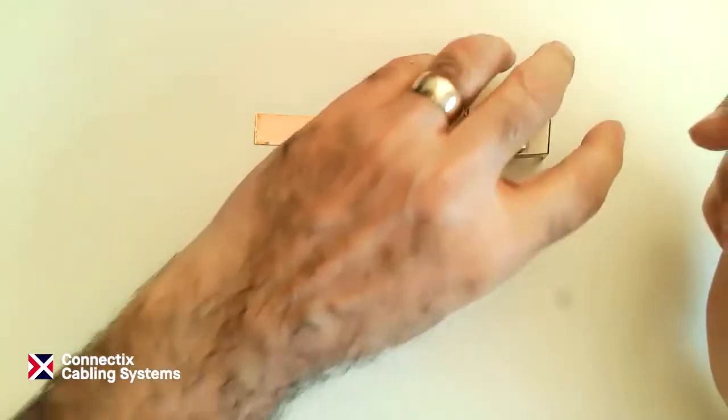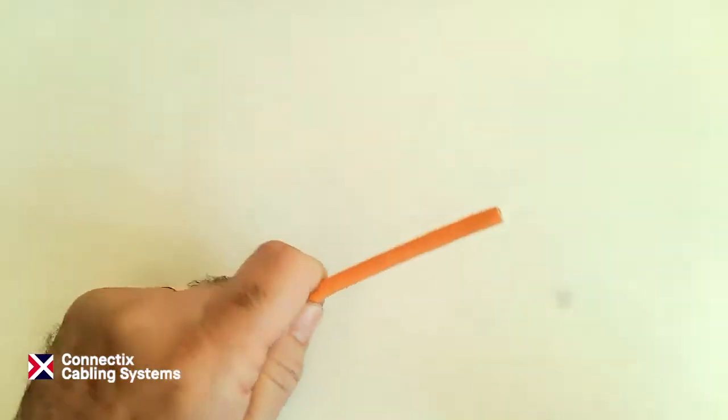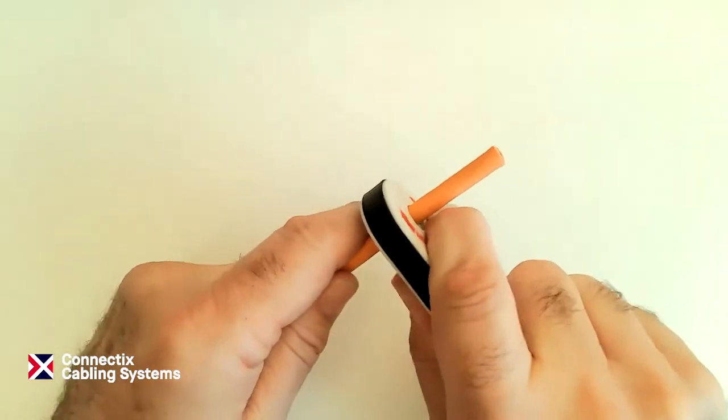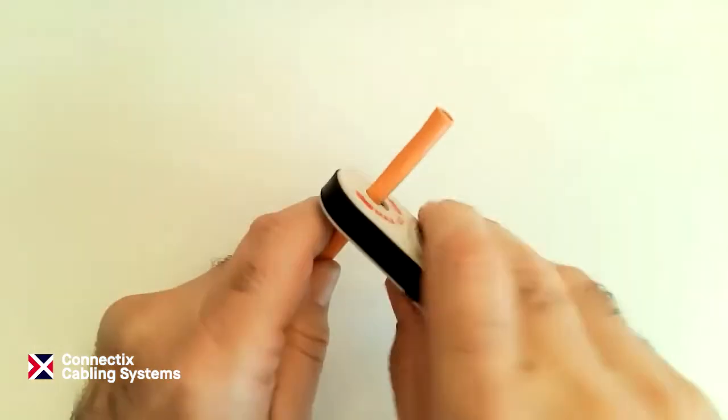Now we're going to do the process, not at the speed an installer would do it, but a little bit slower so we can see what's happening. So we're going to start with the cable and I'm going to take about 30 to 40 millimeters of sheath off. That's all I really need.